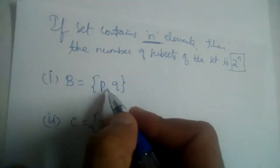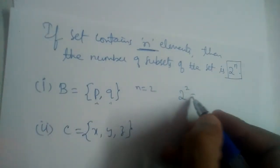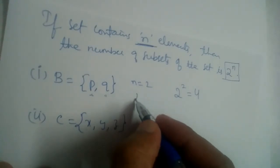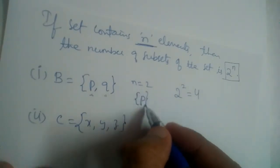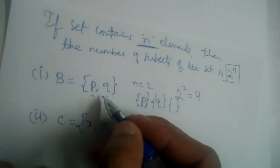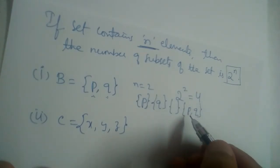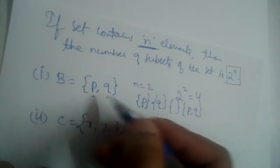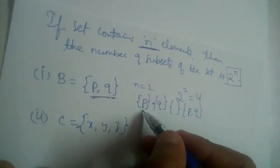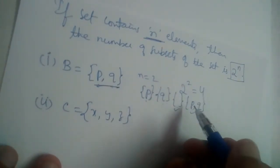For example, B is equal to {p, q}. How many subsets can we write? n is equal to 2, so the formula gives us 2 power 2, which is 2 squared, equal to 4. So we can write 4 subsets. Those are: {p}, {q}, the empty set — since empty set is a subset of every set — and {p, q}, because a set is a subset of itself. Don't forget the empty set and the set itself.